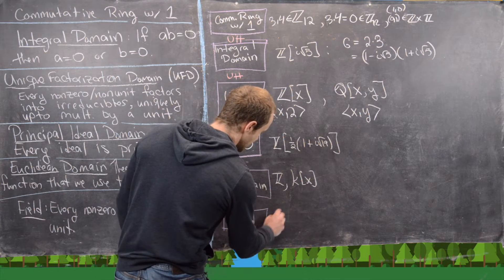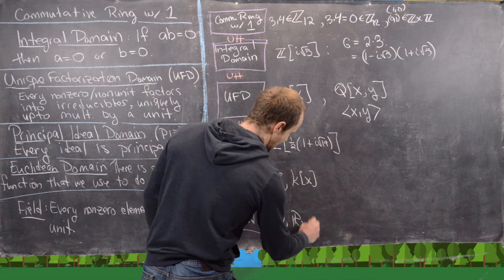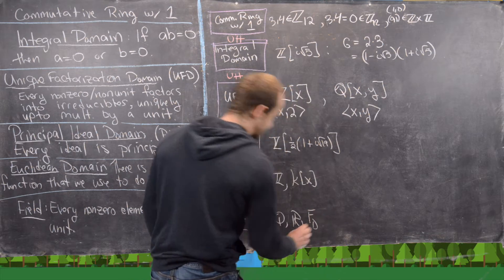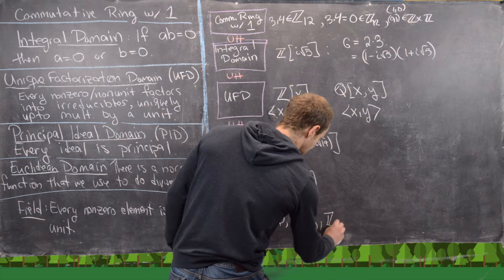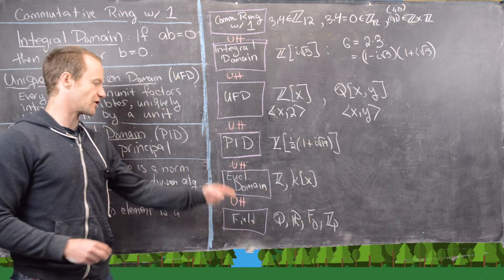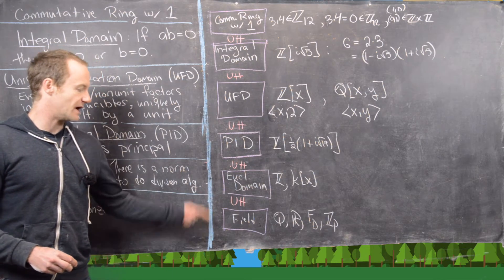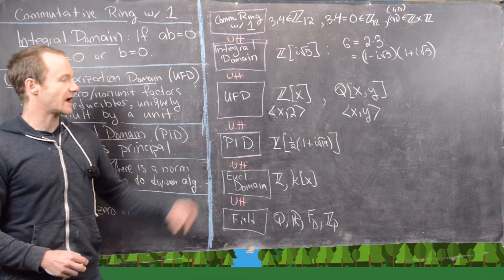So maybe we can have like the field of rational numbers, the field of real numbers. We can have the field of fractions for any integral domain D. We can have a finite field ZP, and so on and so forth. So there are a bunch of fields as well. But we're not considering anything below that. That's kind of the most structure that we want.